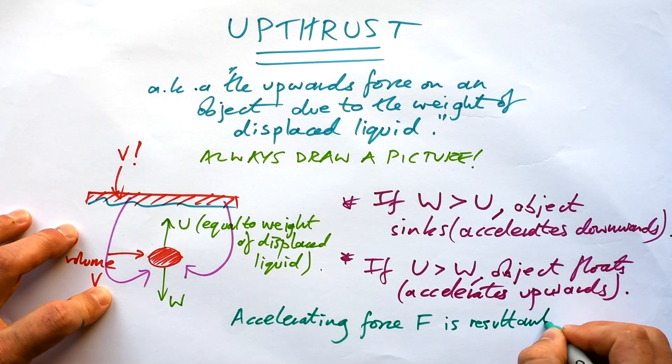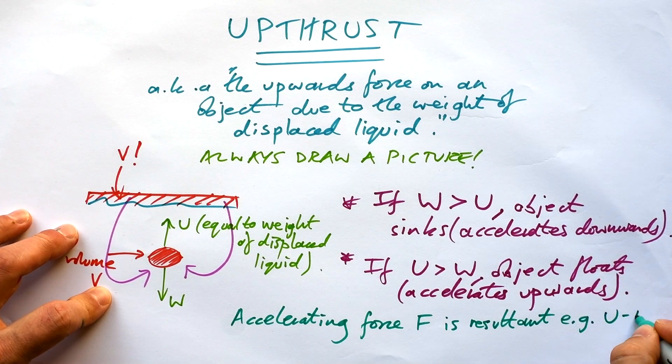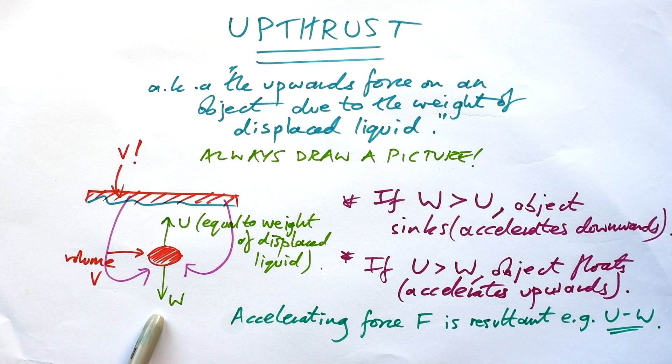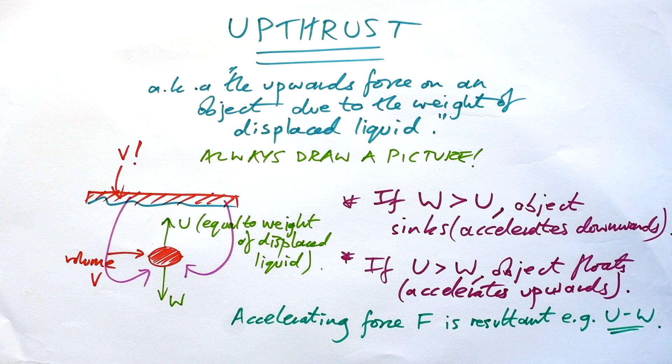And of course, the accelerating force is going to be the resultant, e.g. upthrust minus the weight. So let's say that we have 10 newtons of weight, 12 newtons of upthrust. Overall, there's going to be a force of 2 newtons accelerating the ball upwards.